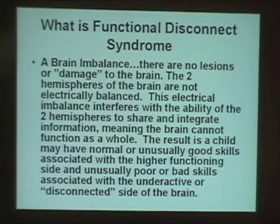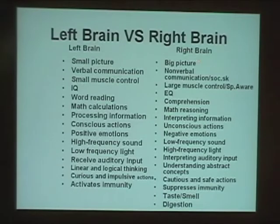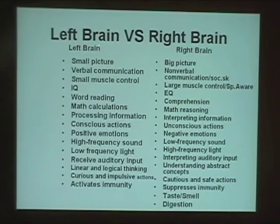This next slide is perhaps one of the most important. On the left side you'll see left brain characteristics — what the left brain is responsible for. On the right side, what the right brain is responsible for. Generally, autism, ADHD, and the autistic spectrum disorders are a right brain weakness; dyslexia and learning disabilities are basically a left brain weakness.